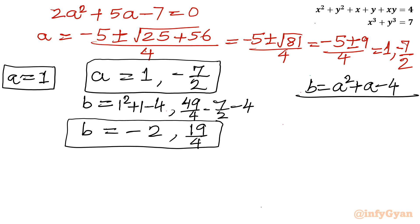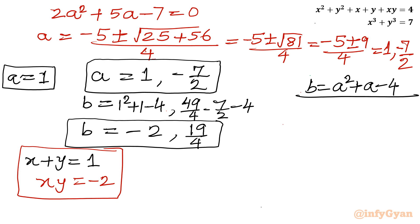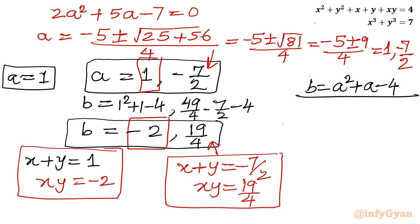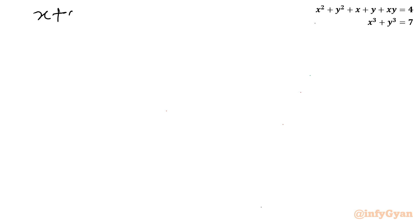Now we have two systems of equations. Recalling x + y = a and xy = b, the first system is x + y = 1 and xy = −2. The second system is x + y = −7/2 and xy = 19/4. We will solve both systems one by one, starting with the first.